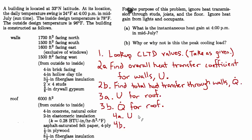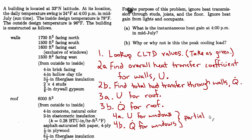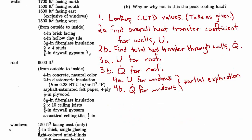We'll also find the heat transfer coefficient and total heat transfer through the windows — though for these I'm giving a partial explanation, as I have some questions about how those numbers are arrived at. I'll share what I can, and if folks want to chime in with comments that would be fantastic. There's still a lot of value in going through the exercise of finding the overall heat transfer coefficient and total heat transfer. Once we have the heat transfer for walls, roof, and windows, we'll add them all up to find Q-dot total, which answers part A.